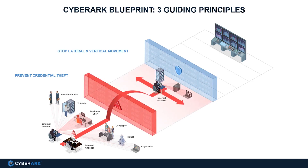Once an attacker has gained a foothold, they'll likely move through your infrastructure in hopes of either stealing even more privileged credentials or landing on a system that will suit their end goals — be that data extraction or damage to the organization. This movement can occur laterally, such as from a workstation to a workstation, or vertically, perhaps from a workstation to a domain controller or a cloud console, which are two of the worst-case scenarios.